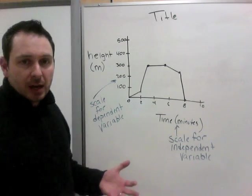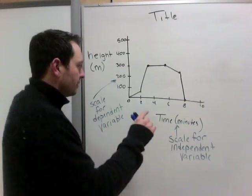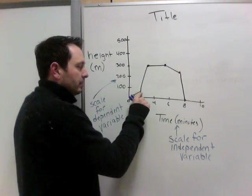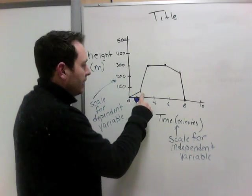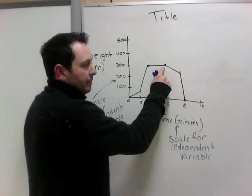Now, properties of a graph. Properties of a graph are, so let's look at this in really general terms. It's going up slightly. Then there's a very steep increase. And then it's remaining at the same height.